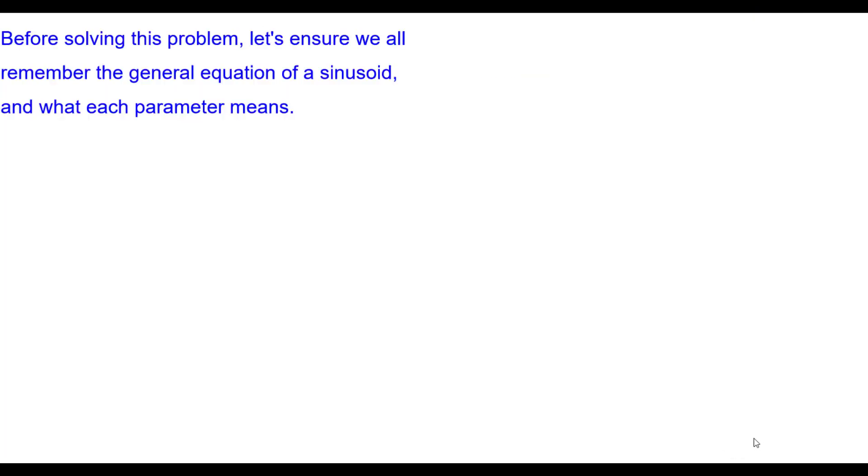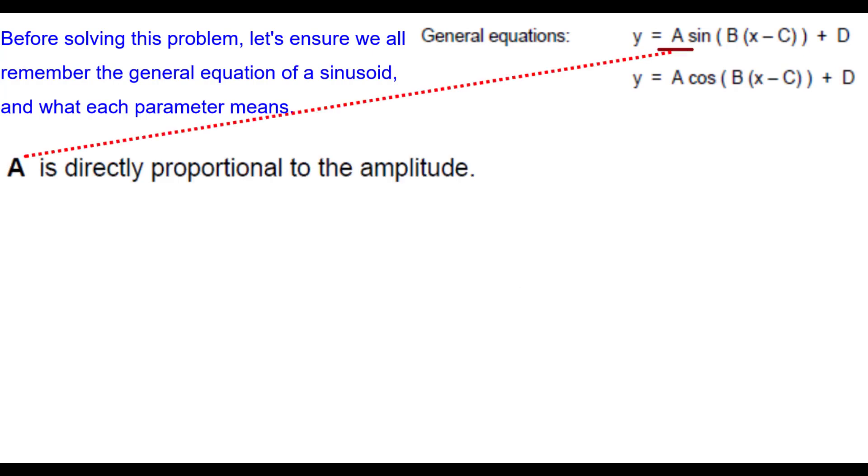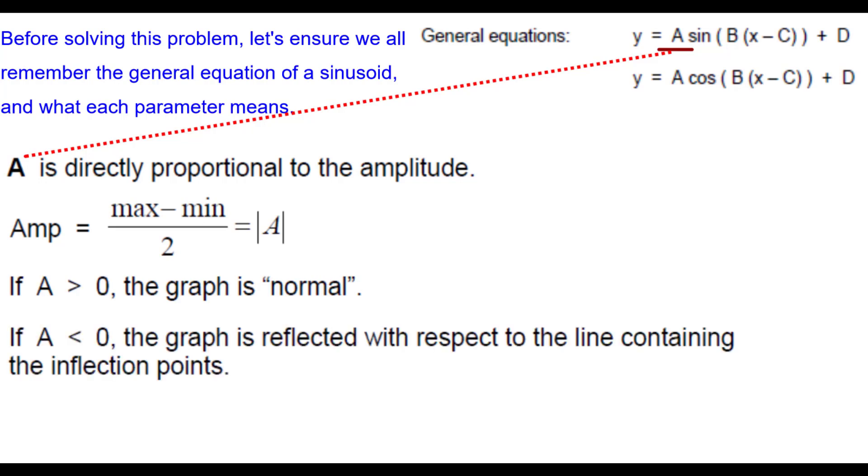Before solving this problem, let's make sure we all remember the general equation of a sinusoid and what each parameter stands for. Here are the general equations, one in terms of sine and one in terms of cosine. Recall that the parameter A is directly proportional to the amplitude. The amplitude is found by subtracting the max and min and then dividing by 2. If A is positive, the graph is normal. And if it's negative, then the graph is reflected with respect to the line containing the inflection points.